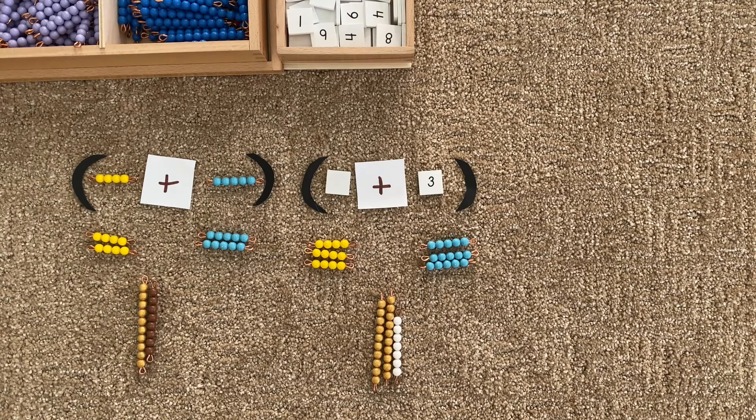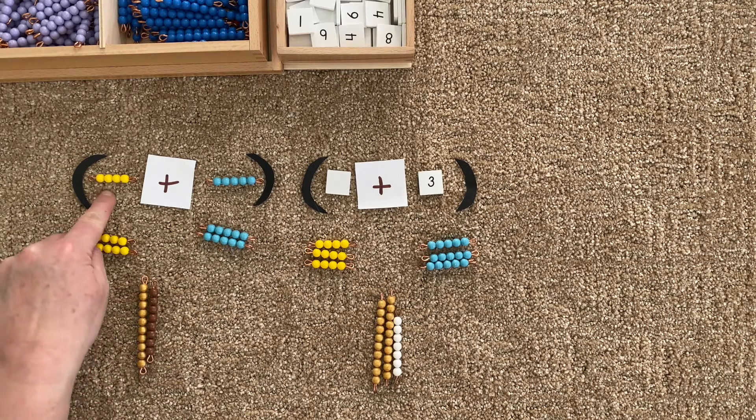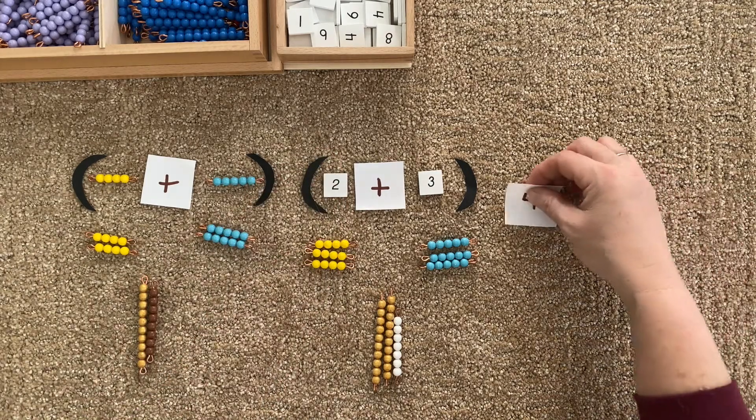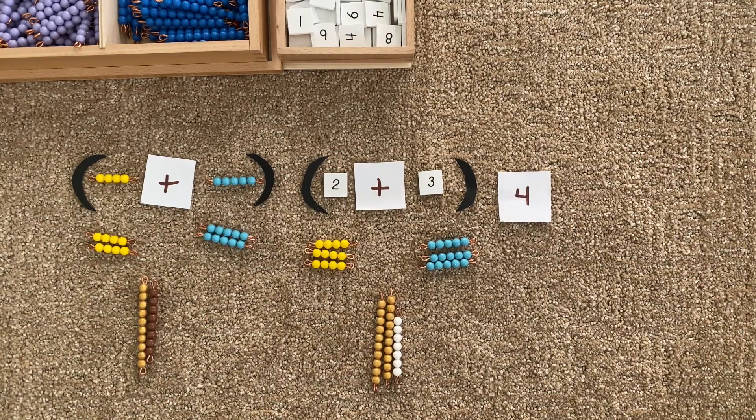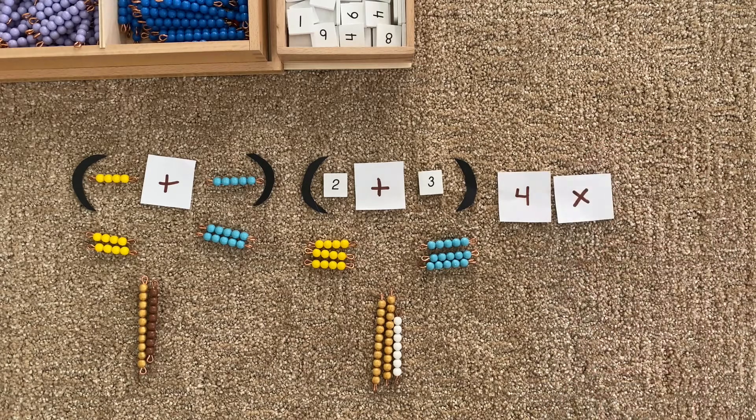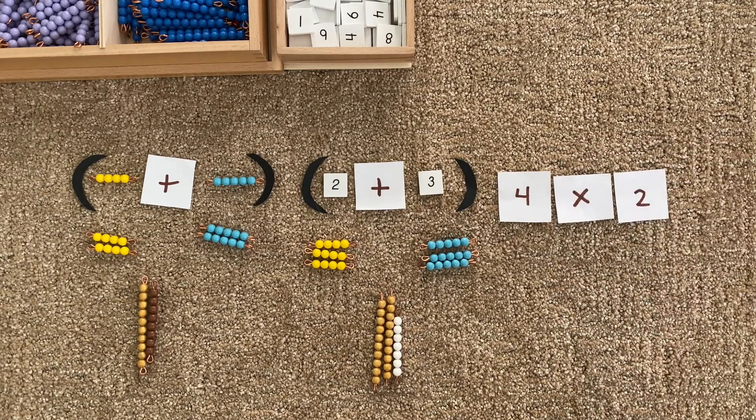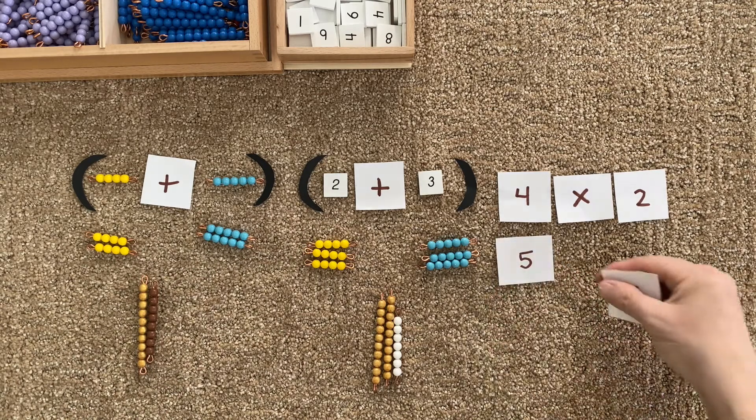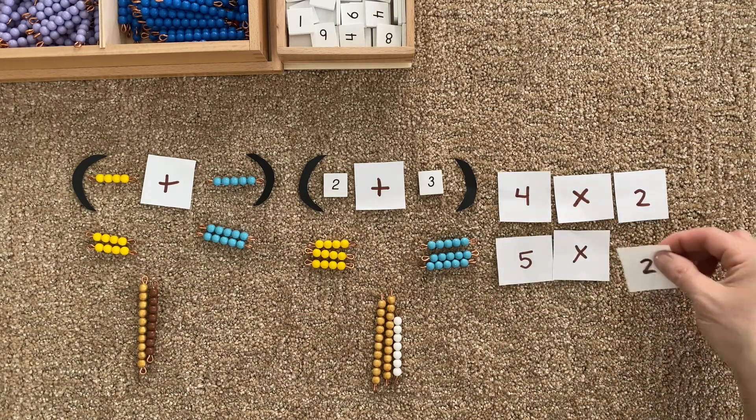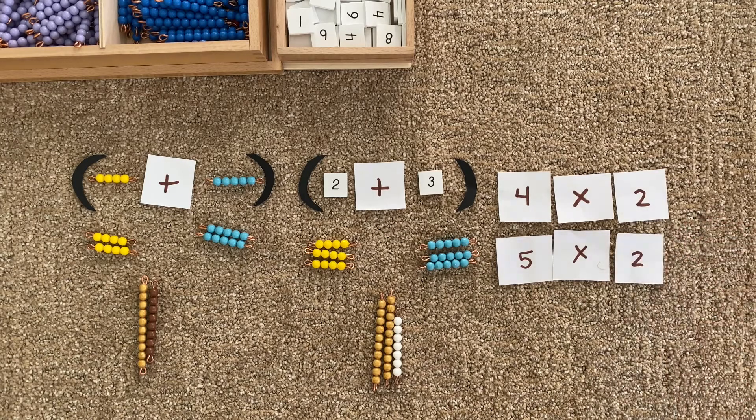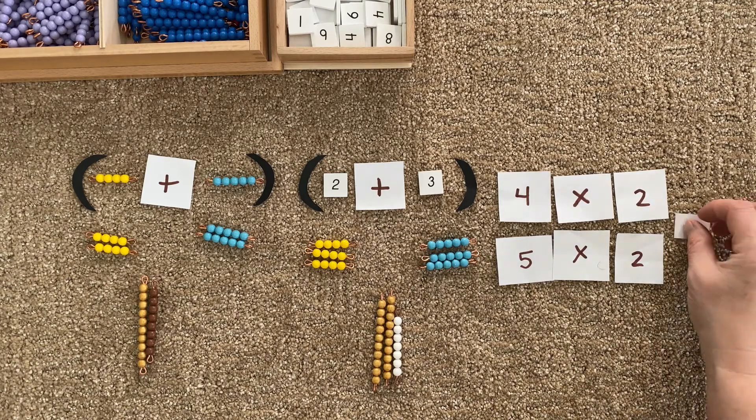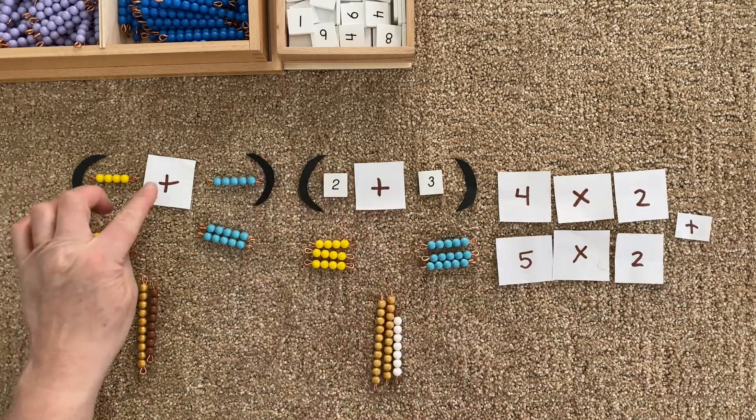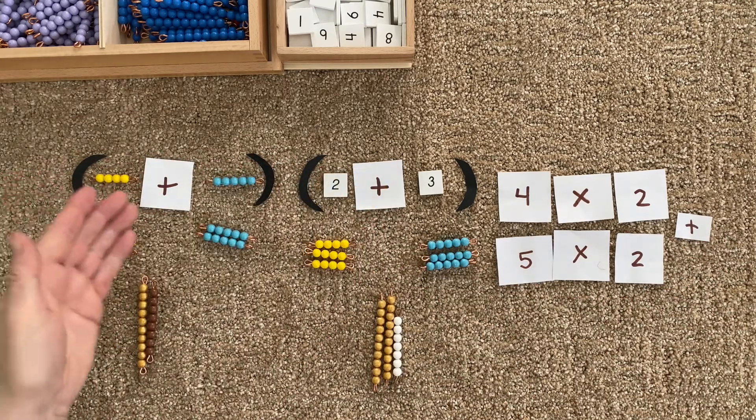Let's see how else we can think about this problem. We took our four two times, and then I took my five two times. We're adding each of these together because we need to, because our problem asks us to do so.